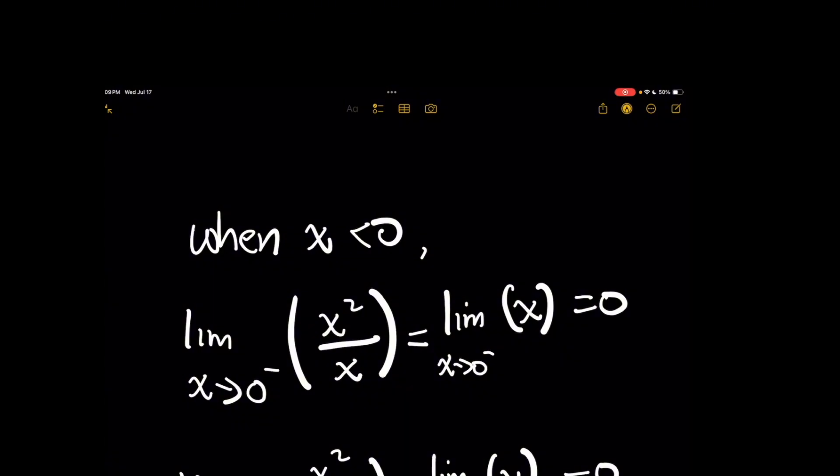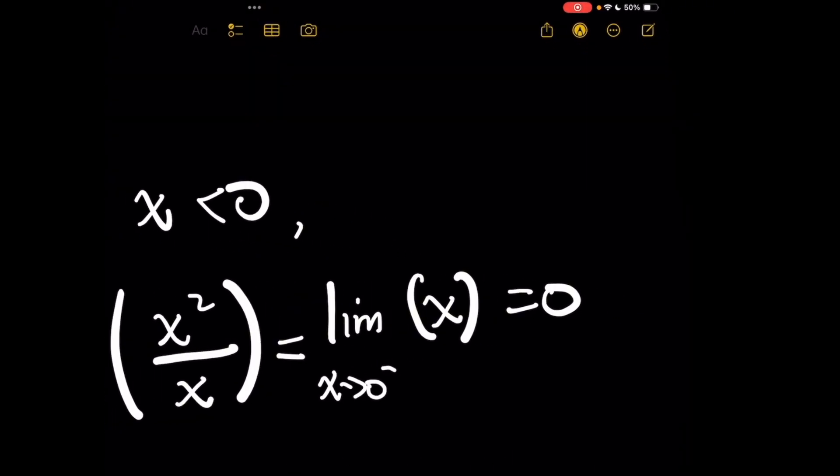And so x squared over x, in this case, since we never get to 0, so we don't have any issues with division, would simply be evaluating the simplified expression of the limit as x approaches 0 from the left of simply x. And we know that'll be 0. That's safe to do.